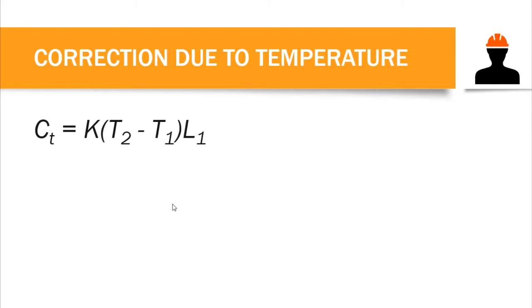There are a lot of factors that could influence our data as we are measuring or laying out points. One of these factors is temperature. If there is excessive heat at the place of measurement, that would cause our tape to elongate — there would be an increase in length. For example, if you have a plastic tape and it's too hot, that would cause the tape to expand and result in error in our measurement.